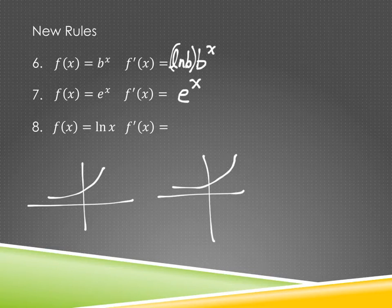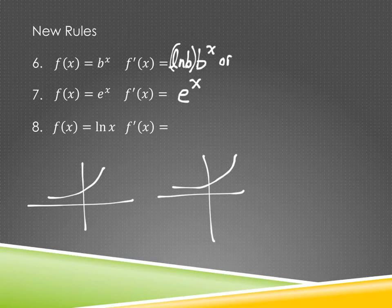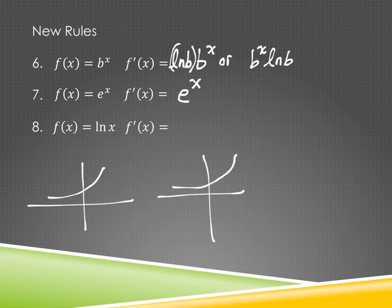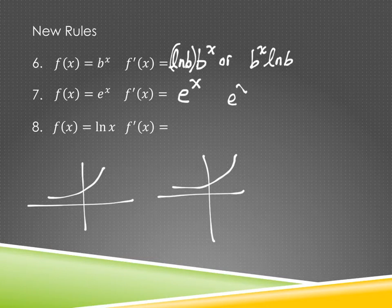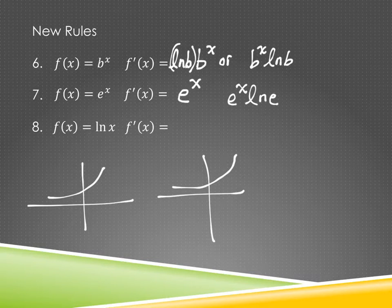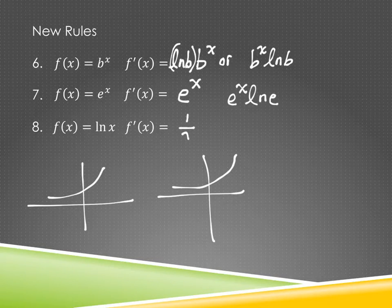And you can write it either before or, if that looks funny to you, you can write it after. And if you think about it, that actually works for number 7 as well. If you had somehow forgotten the derivative of e to the x was e to the x, and you tried to do this, it would be okay because does anybody remember what the natural log of e is? It's 1. So see, it works. It even works for e to the x.